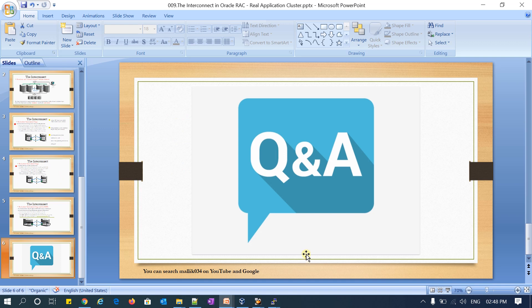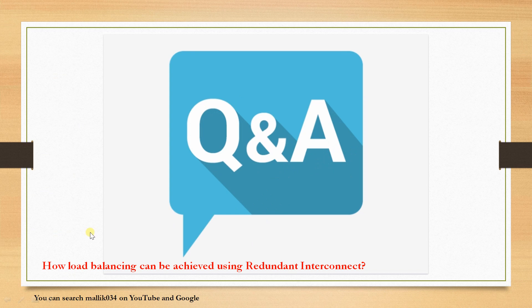That's it for today's session. The question for today is: how can load balancing be achieved using this redundant interconnect? We already saw that when a private NIC fails, another redundant NIC card becomes active and the connection is passed to it — but how is load balancing actually achieved? If you understood today's topic, please comment on my YouTube channel. I will answer in the next session. Thank you.